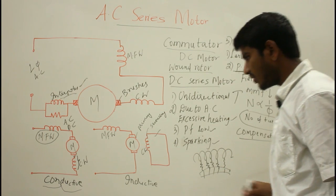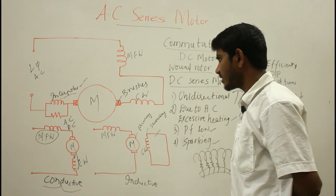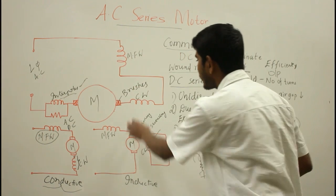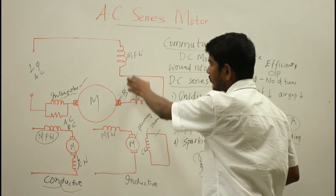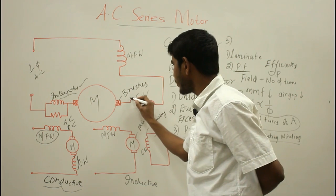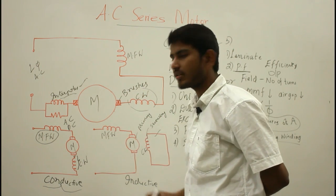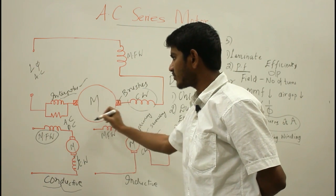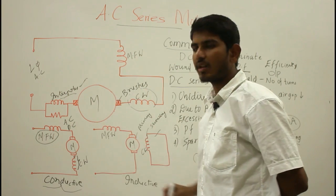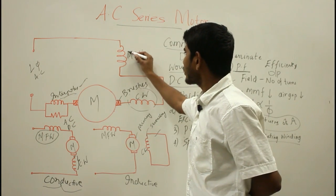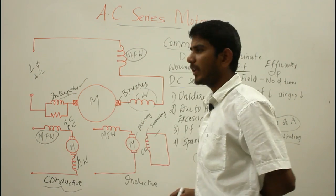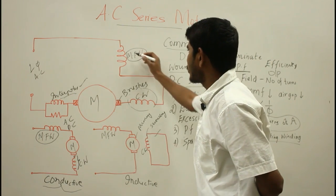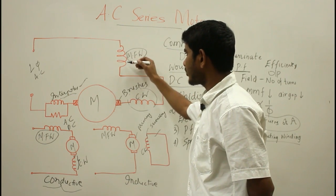To summarize, we have discussed commutator motors, compensating windings, and the conductively and inductively compensated types of AC series motor. In the overall diagram, the compensating winding is at 90 degrees to the main field winding, and since it is connected to the stationary brushes, it has no problem with the rotating armature. The motor takes more reactive voltage from the main field winding compared to the compensating winding.